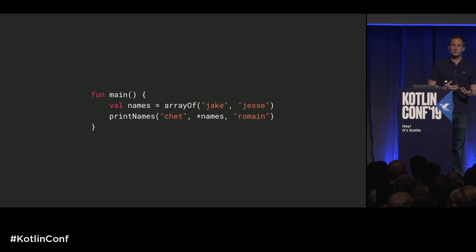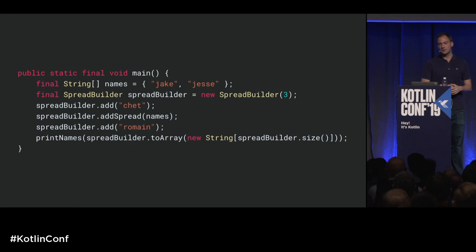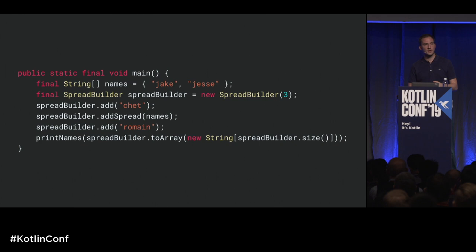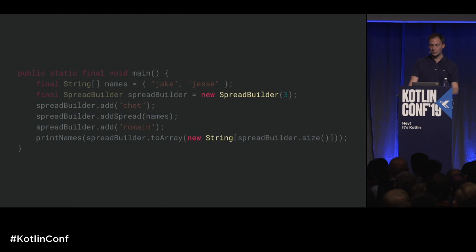We can make the example more complicated by interleaving a spread with regular parameters. Here we have an array of names, then call printNames adding Chet's name and my own name, putting the spread in the middle. The code looks very different and much more complicated. We have a SpreadBuilder that appears. The three floating parameters are added directly to the spread builder, and then the array of names is added as a spread. How many allocations are we doing? There are two obvious ones: the SpreadBuilder and the string array at the end. But the SpreadBuilder itself contains an ArrayList, and ArrayList contains an ObjectArray — so now we have four allocations.